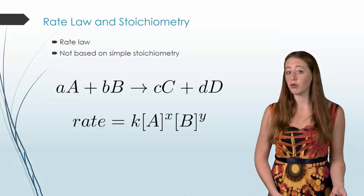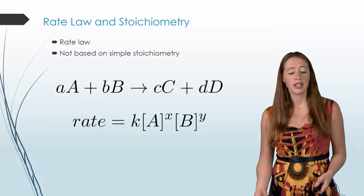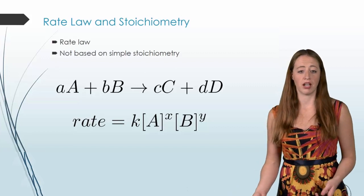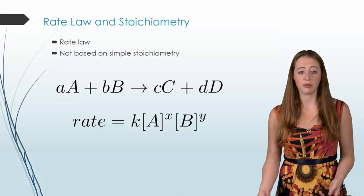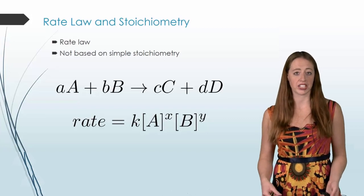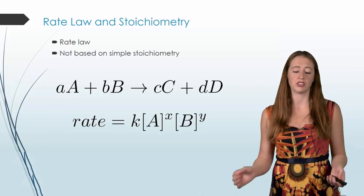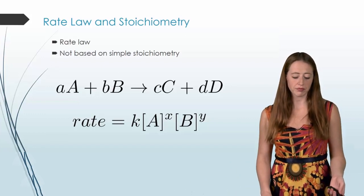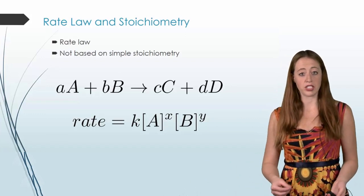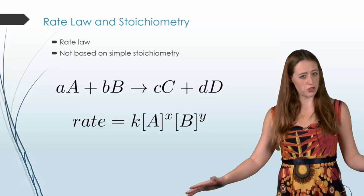The general form for it is written here. So let's say I have two reactants, A and B. A very typical general rate law would be rate is equal to k, where k is some constant that's just dependent on the individual reaction. This isn't something that's a constant over all of the universe, just the individual reaction. And then multiplied by each reactant raised to an exponent. So that's the most general version.